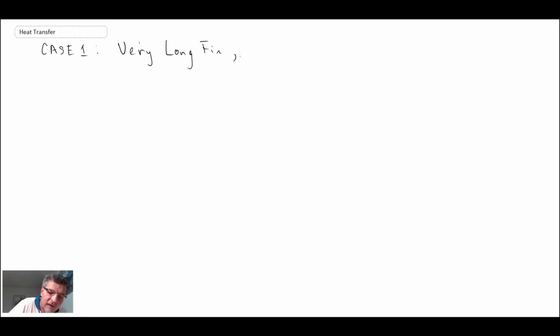So we can say temperature at this L, L being some very long distance, eventually will get to the free stream temperature. With our variable theta at that L is then going to be equal to zero. So that's boundary condition scenario or case one.